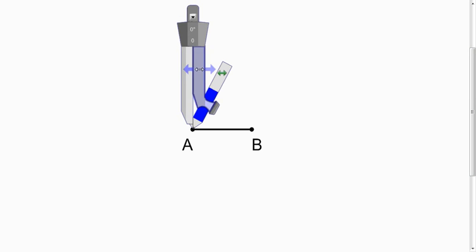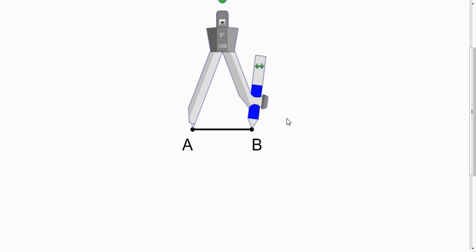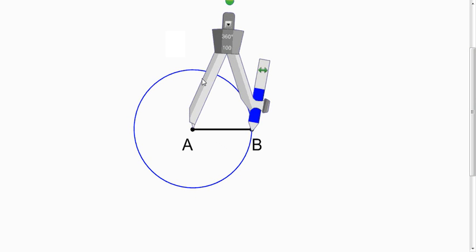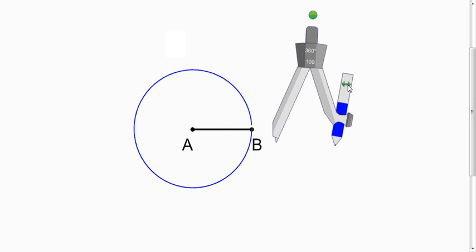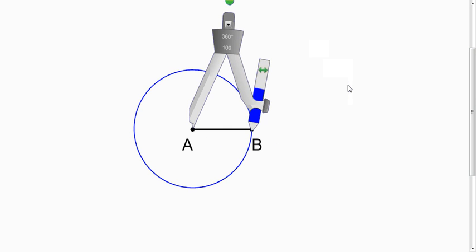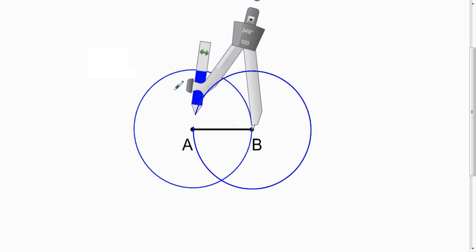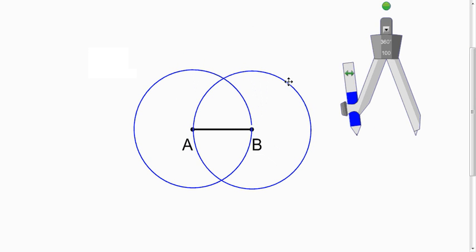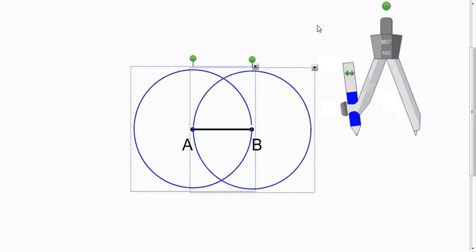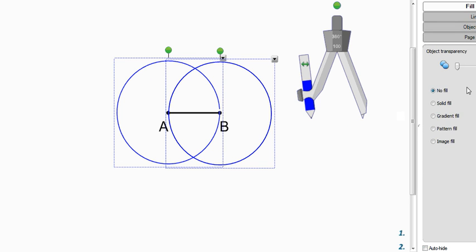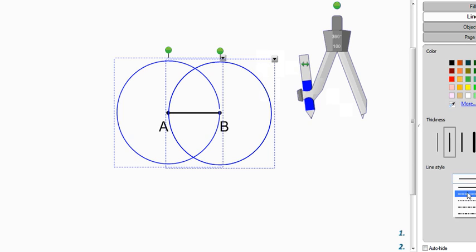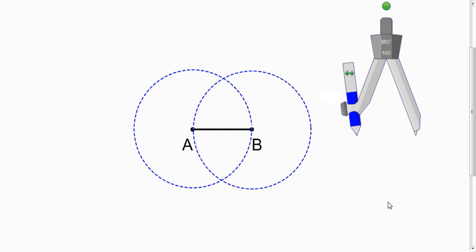So we want to make an equilateral triangle just like that cat problem. Put the pointy end on A and the pencil on B and draw a circle. And we're going to do the exact same thing over at B. So there we have two circles, same radius. Make sure you make them dashed. What might be easiest is drawing the circles and then erasing parts of it so it looks dashed.